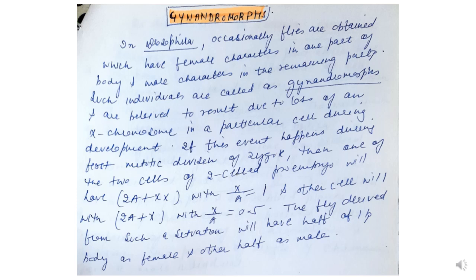There is also a phenomenon called gyneandromorphs. In Drosophila, occasionally flies are obtained that have female characteristics in one part of the body and male characteristics in the remaining part. Such individuals are called gyneandromorphs and are believed to result from the loss of an X chromosome in a particular cell during development. If this happens during the first mitotic division of the zygote, one of the two cells will have the constitution 2A + XX (X/A = 1) and the other 2A + X (X/A = 0.5), resulting in a fly that is half female and half male.